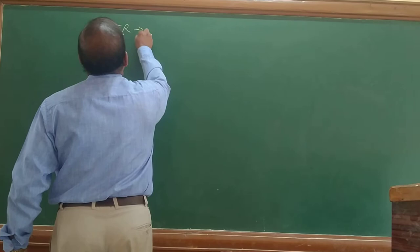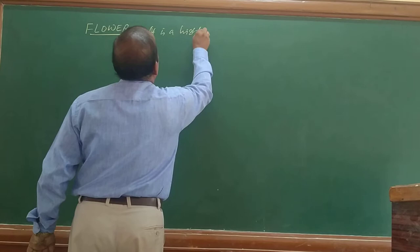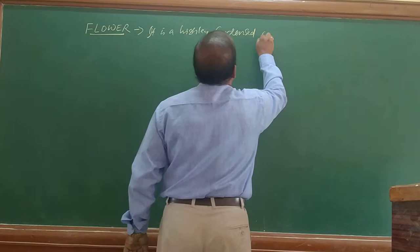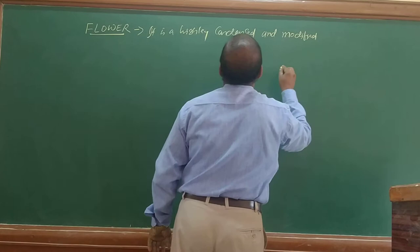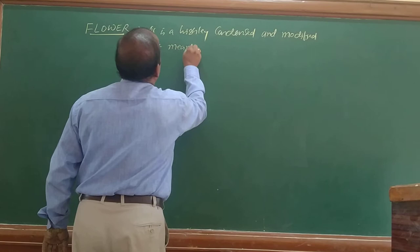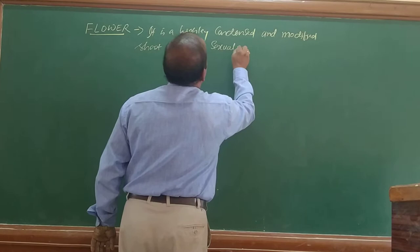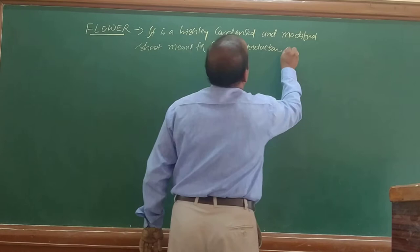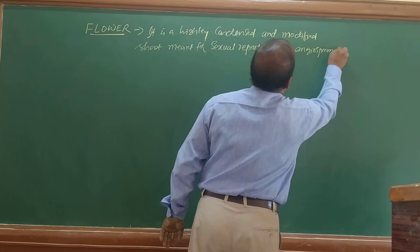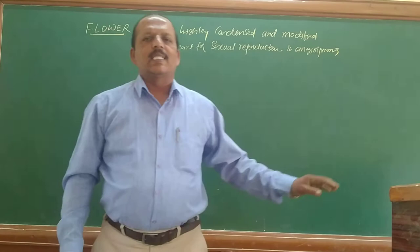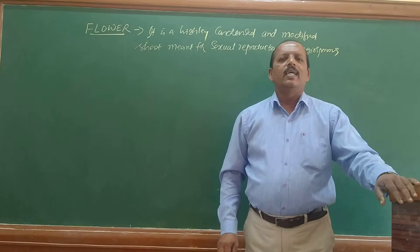A flower is a highly condensed and modified shoot. It is a very condensed and modified plant structure.